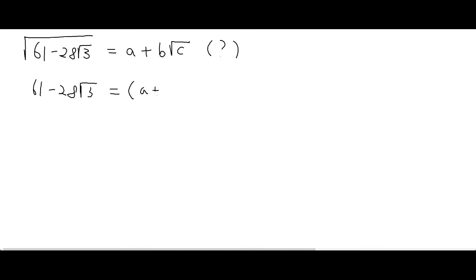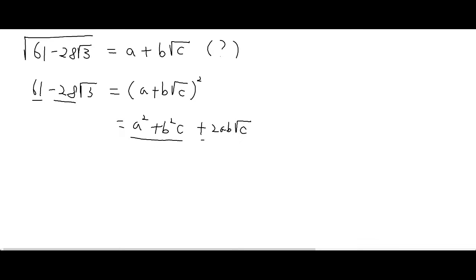If you square (A + B√C), you get A² + 2AB√C — that's the middle term — plus B²C. So you can understand that this part matches. If C equals 3, then 61 must equal A² + 3B², and 2AB must equal negative 28.